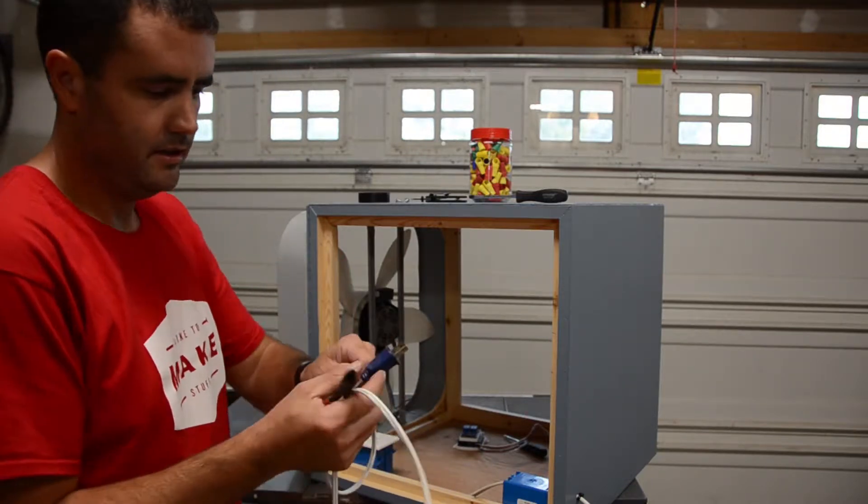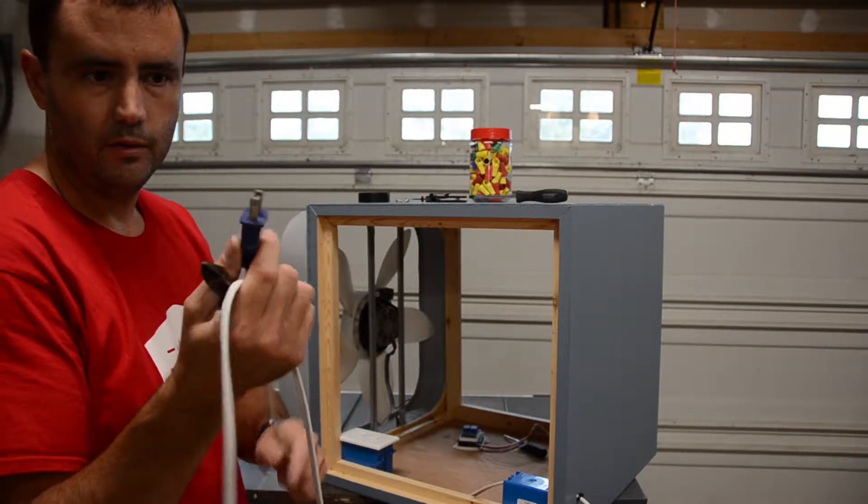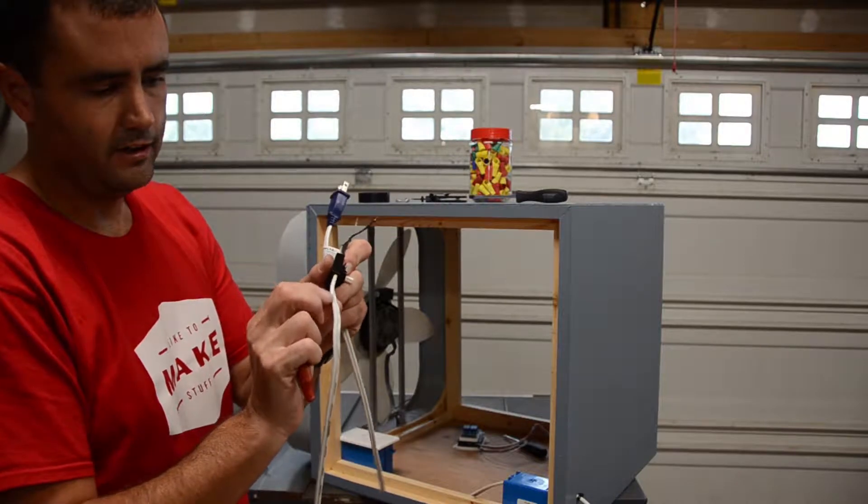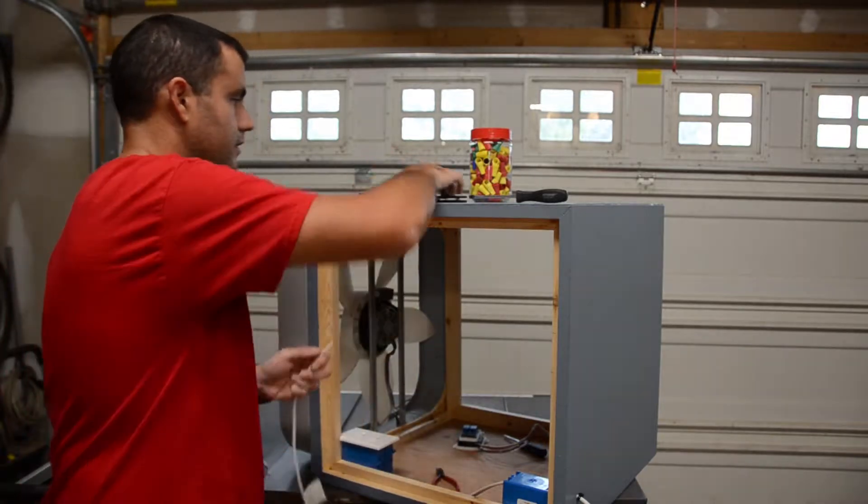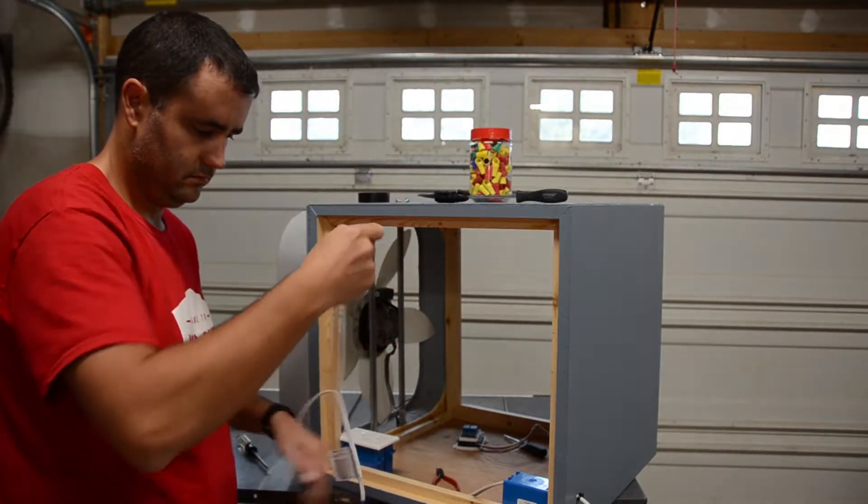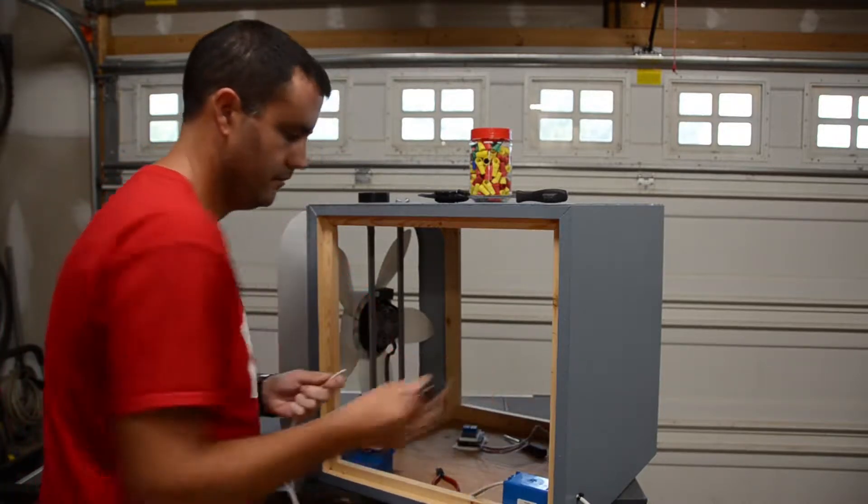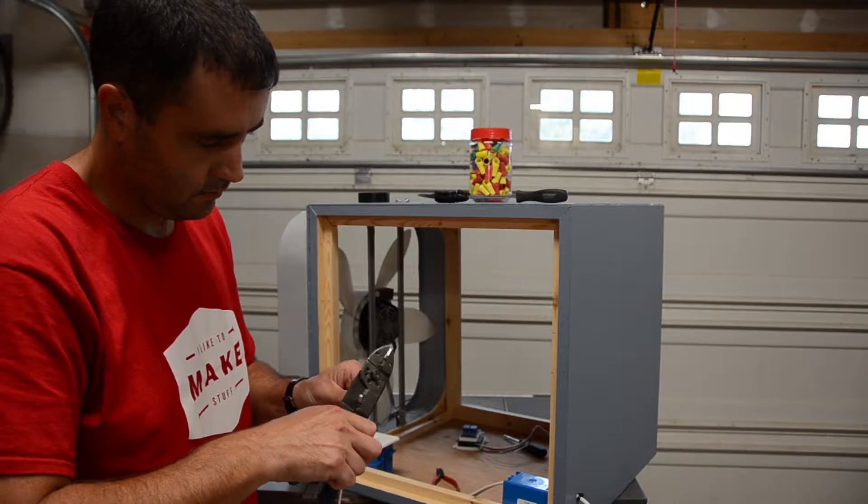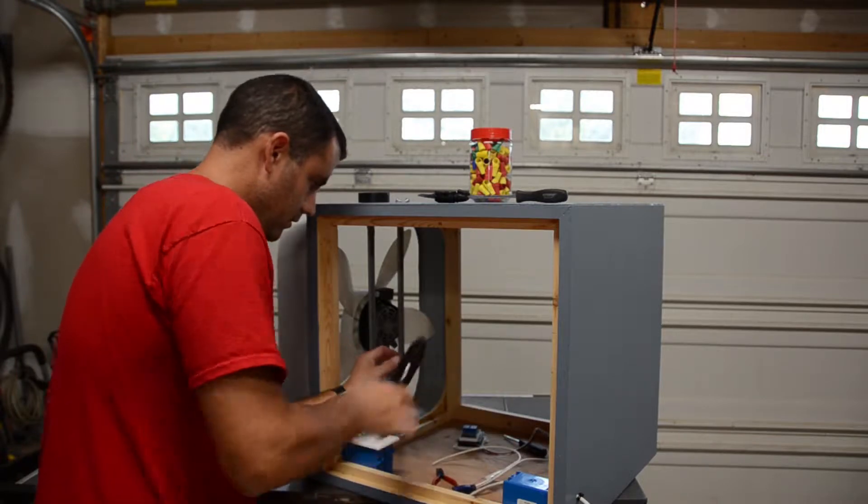Now this is a polarized plug so it will only go in one direction. So I'm going to follow out here to the switch and find that the side of the cord with the ribs on it is the neutral wire. Strip this back, strip this one.